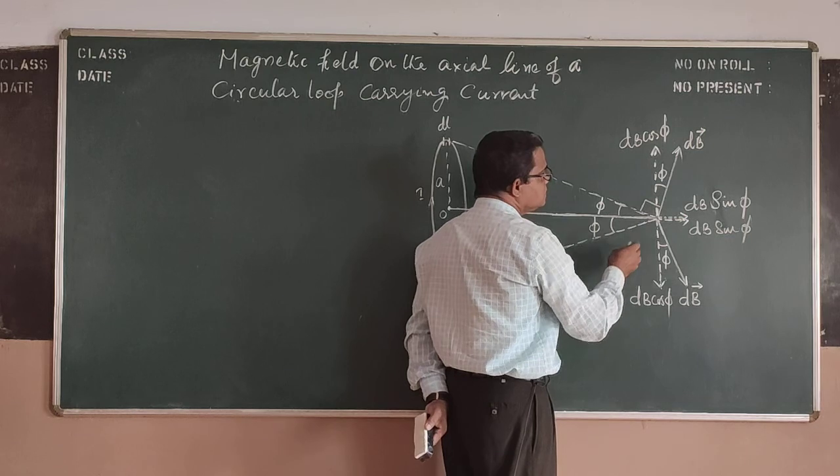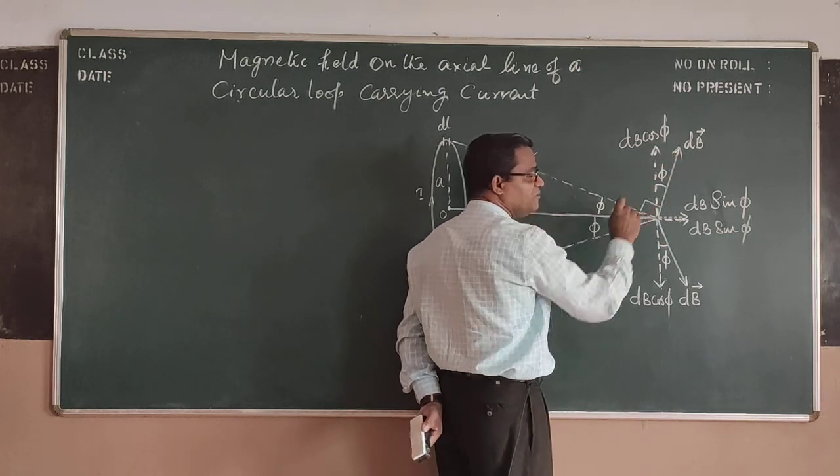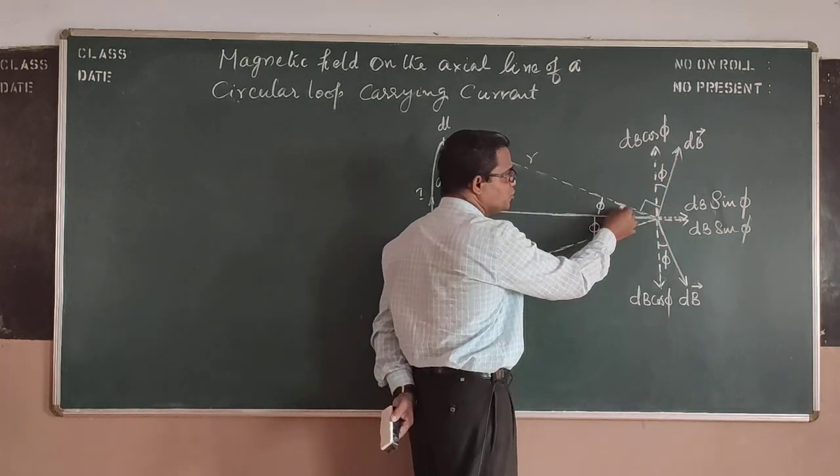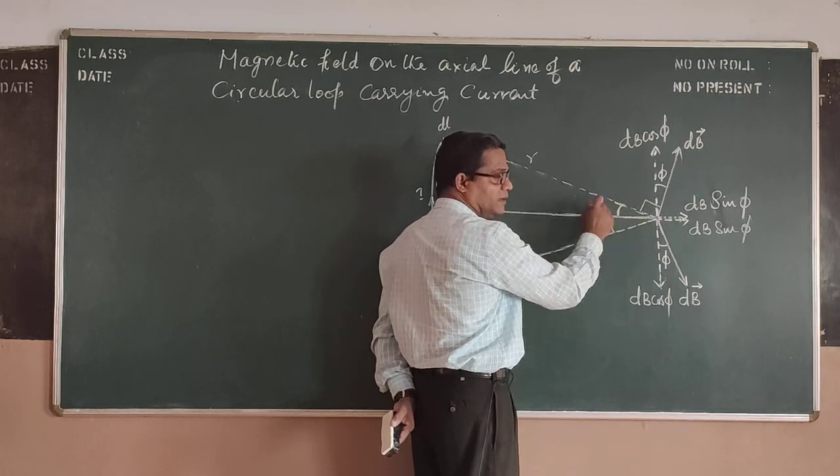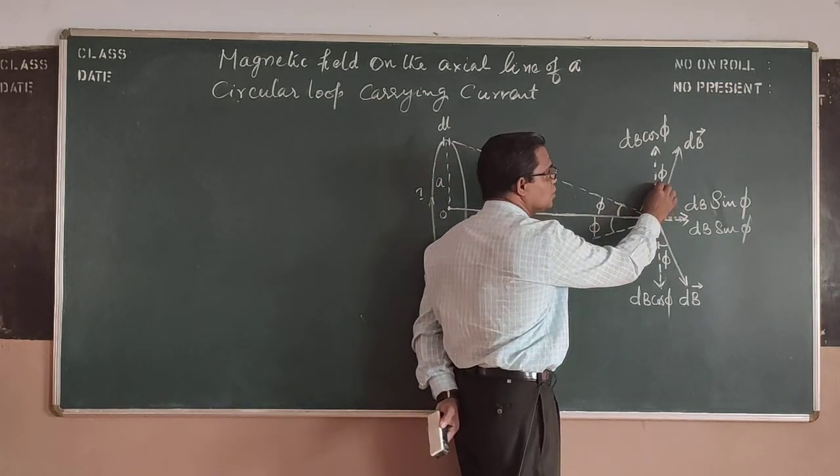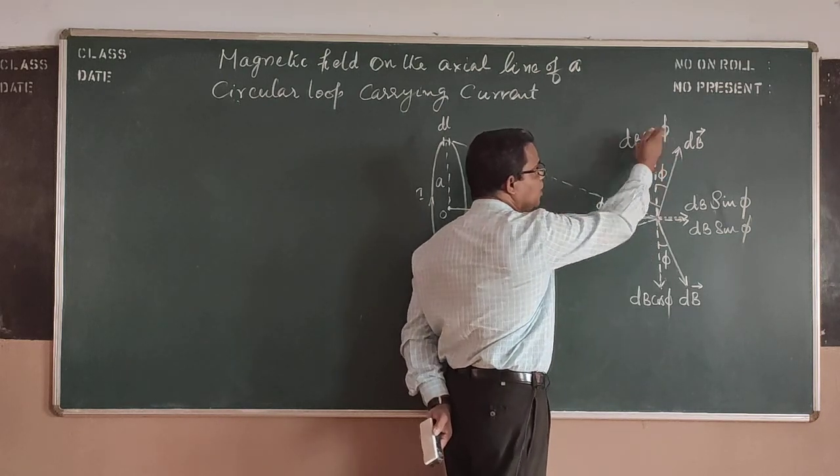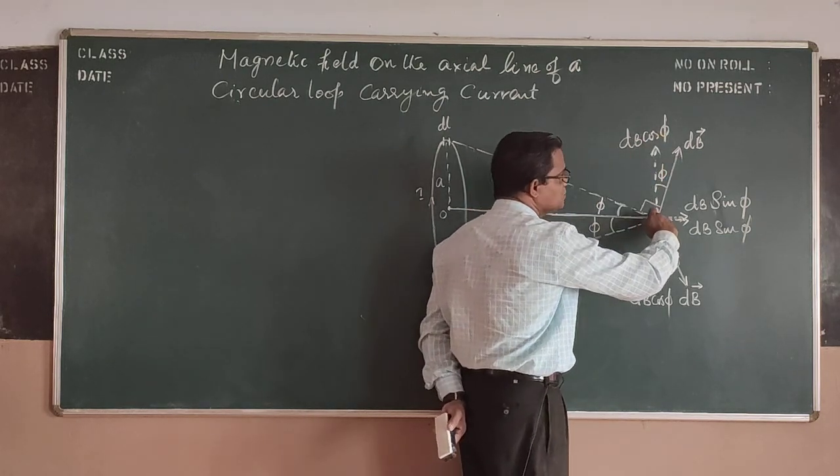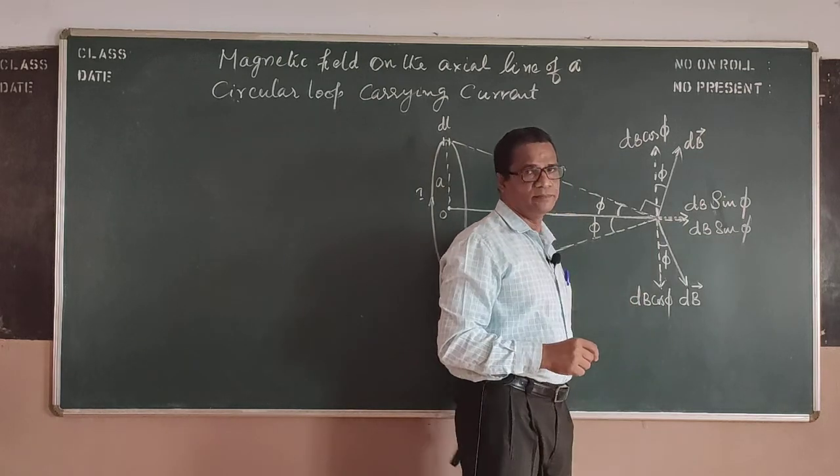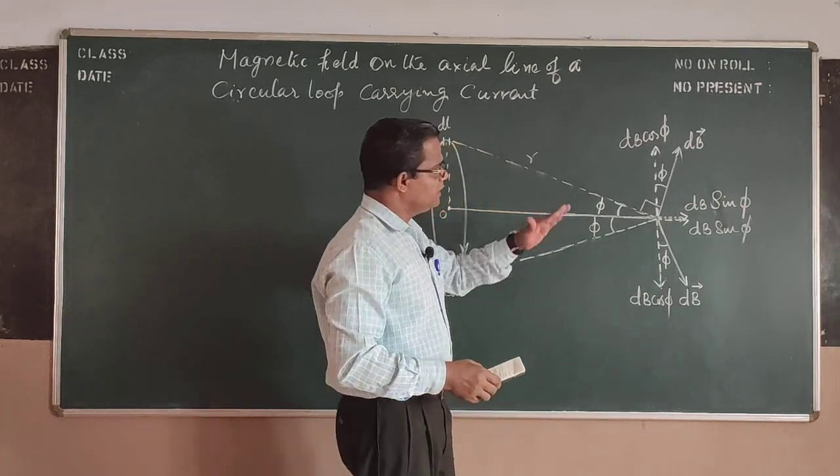So when I resolve that DB into two components, assuming an angle phi here, this angle also will come like this and this also becomes phi. So that this will be DB cos phi and this will be DB sin phi.